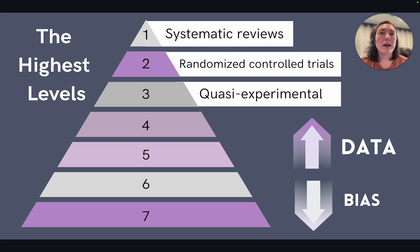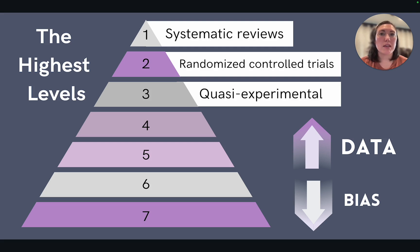Level two evidence is from randomized control trials, or RCTs. This is where participants are randomly assigned to the study groups, and all RCTs have a component of blinding, which means that some aspect of the procedure is masked from the investigators, participants, data collectors, and/or the analysts.